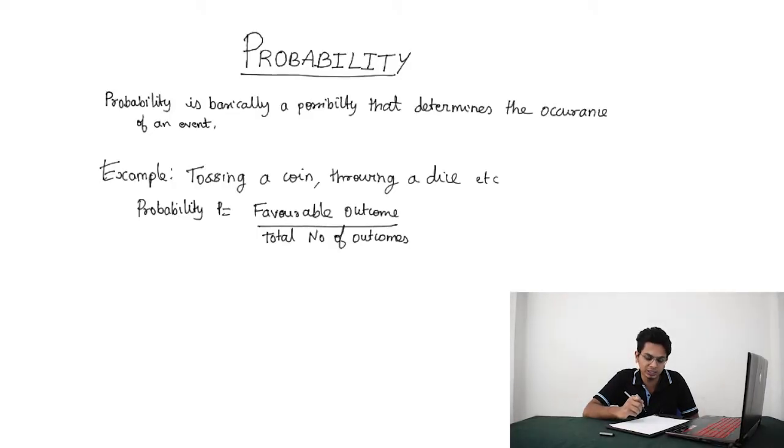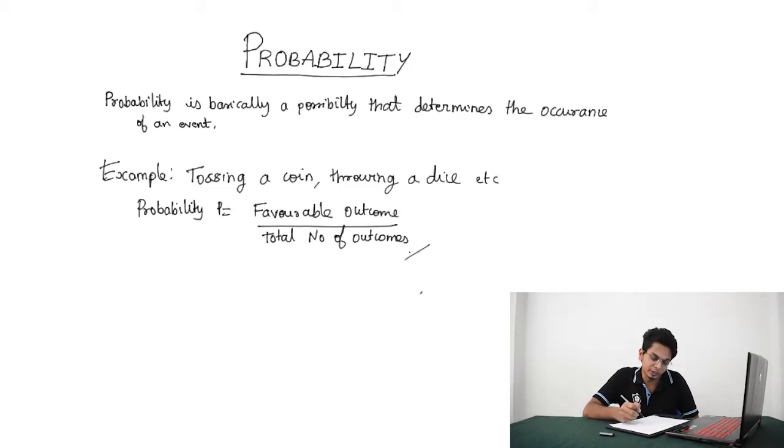So what is probability? Probability is a possibility that determines the occurrence of an event. Now let's take some examples. Some of the experiments carried out are like tossing a coin, throwing a dice, or playing with cards. Probability can be represented as favorable outcome divided by total number of outcomes.